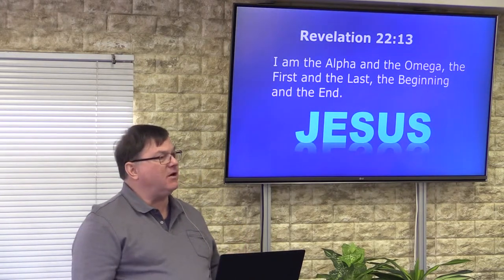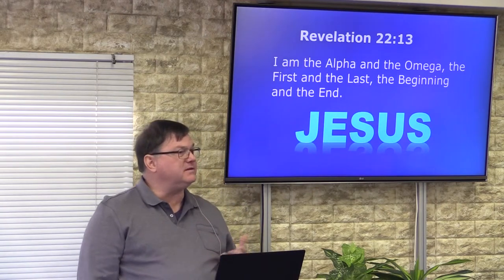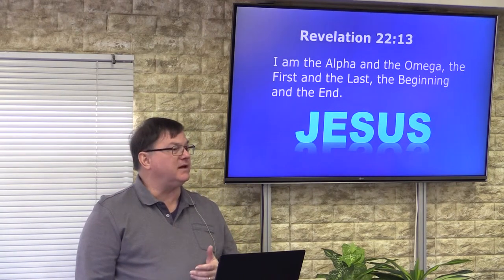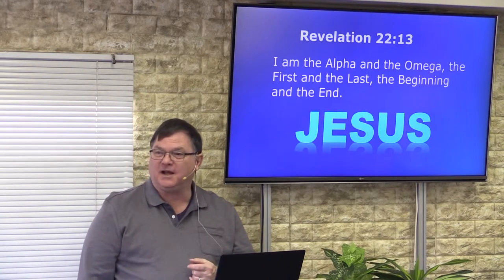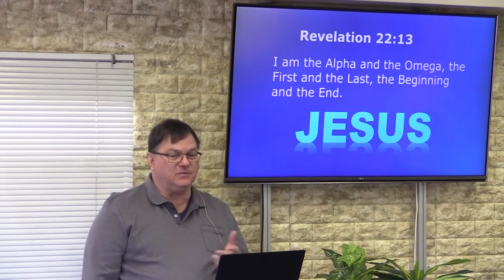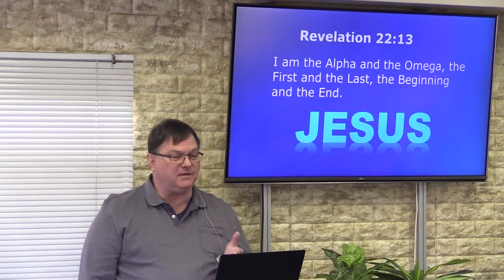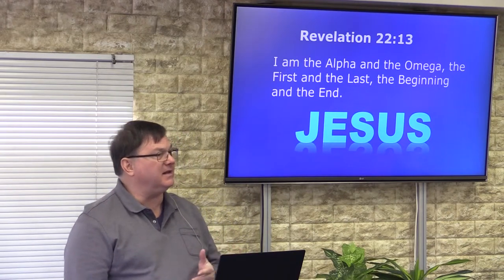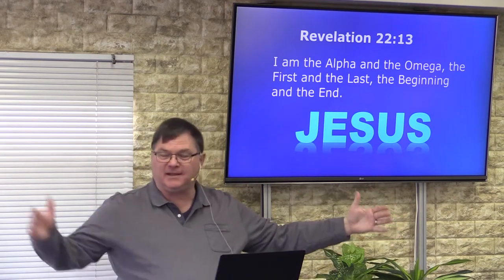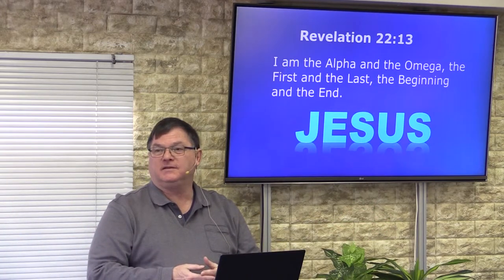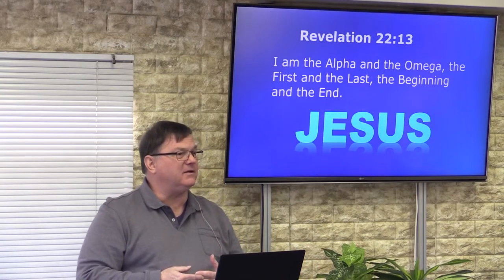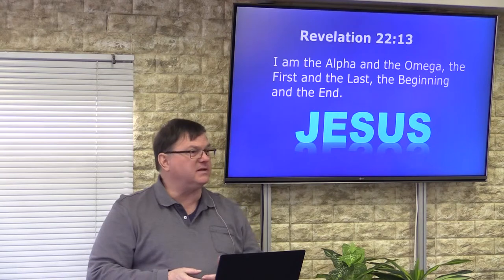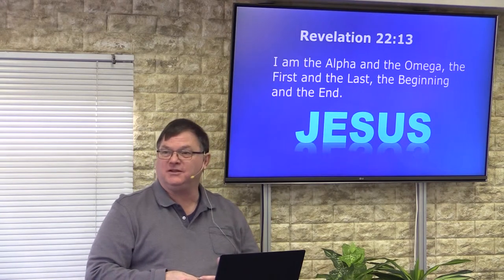Jesus is our Savior and he remains our Savior. He remains God regardless of whether there are other aliens or not. The God of the Bible is the same God of all of these other creatures out there if they're out there. Jesus says in Revelation 22:13, 'I am the Alpha and the Omega, the first and the last, the beginning and the end.' If you've got the beginning and the end, you've got everything in between. The entire universe, no matter how many sextillion stars are out there, it's all in God's hands.